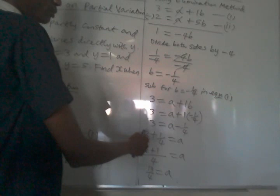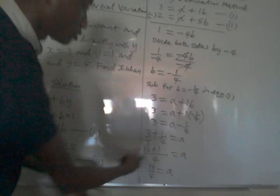3 is equal to a minus 1 over 4. Then from here we have this to be a. Take this one to the other side. It means 3 plus 1 over 4. Then we look for the LCM. The LCM is 4.